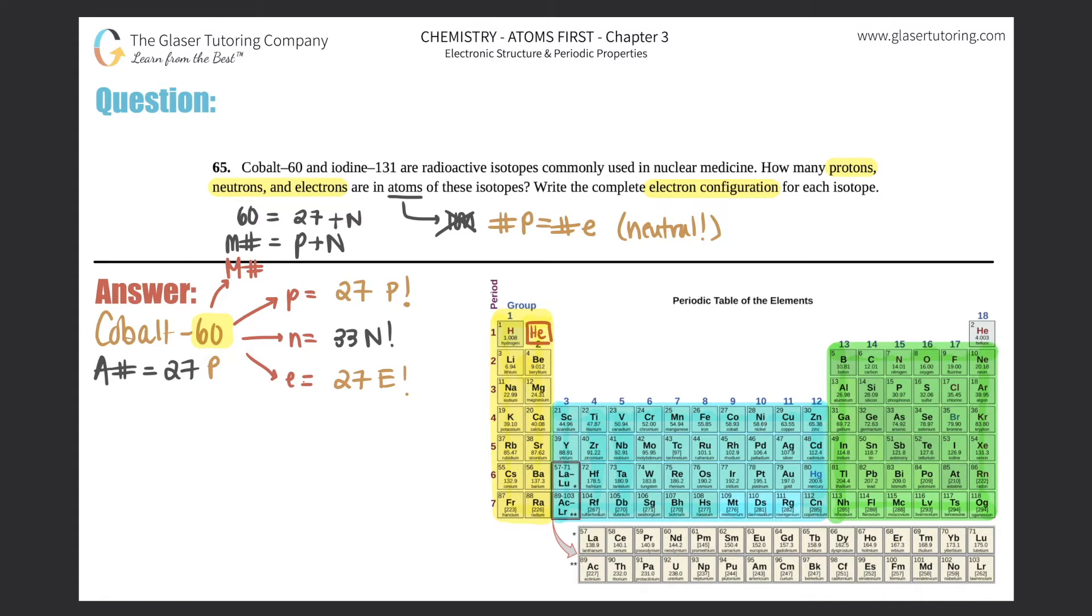Now, let's do the electron configuration. This we should know how to do, right? We're on number 65, and this whole chapter has basically been about electron configuration. So we just have to do the electron configuration for cobalt.